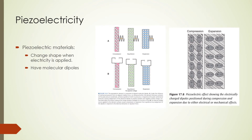An important component of an ultrasound transducer is a piezoelectric crystal. Piezoelectric materials experience a change in shape upon the application of an electric field — they have molecular dipoles where positive and negative charges are separated. When an electrical pulse is applied across the crystal, the orientation of the dipoles change, causing a change in the thickness of the crystal so it is compressed or expanded. Conversely, if a mechanical force is applied, the molecular dipoles change orientation, altering the electrical field and producing a small voltage signal. Because of this reciprocal property, the same transducer can be used for producing ultrasound pulses and detecting electrical signals from returning echoes.